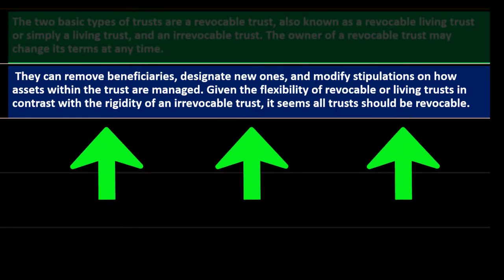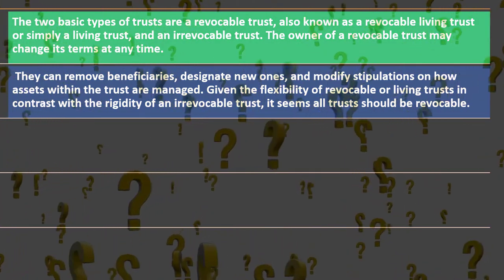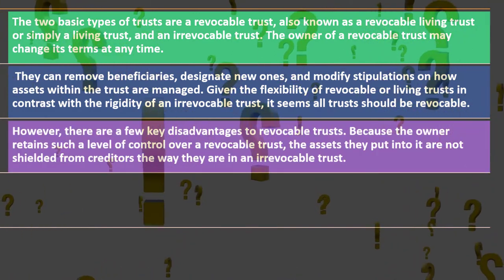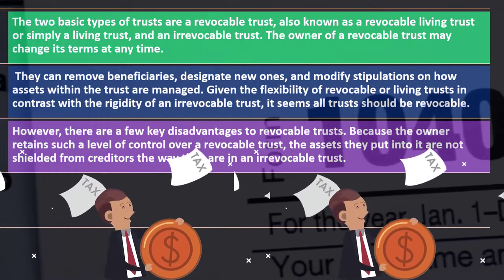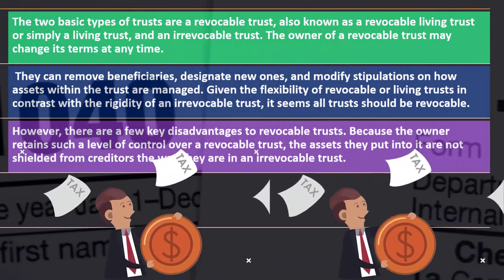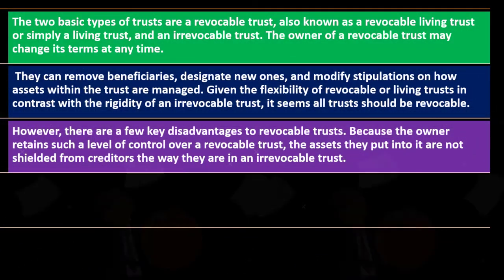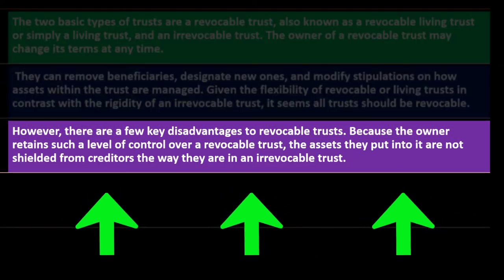Given the flexibility of revocable trusts compared to the rigidity of an irrevocable trust, it might seem like all trusts should be revocable — why give up the capacity to change things? However, other circumstances such as tax considerations in estate planning may lead people to choose less control within a trust.